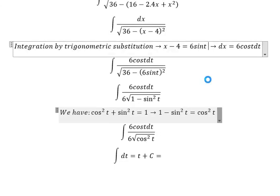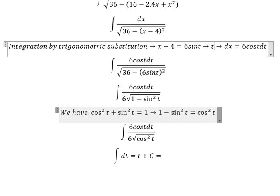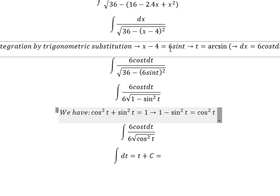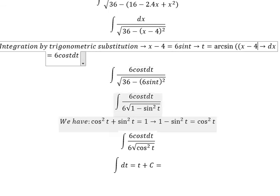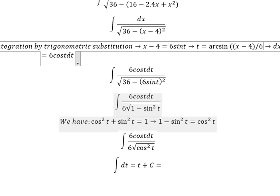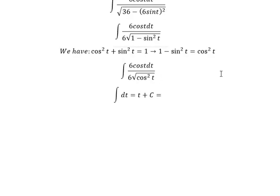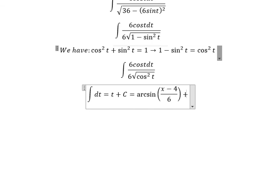So we got t equal to arcsin. We have x minus 4 and we have 6, we divide both sides by 6, and you got x minus 4 over 6. We put this in here and that's the final answer. This is the end, thank you for watching.